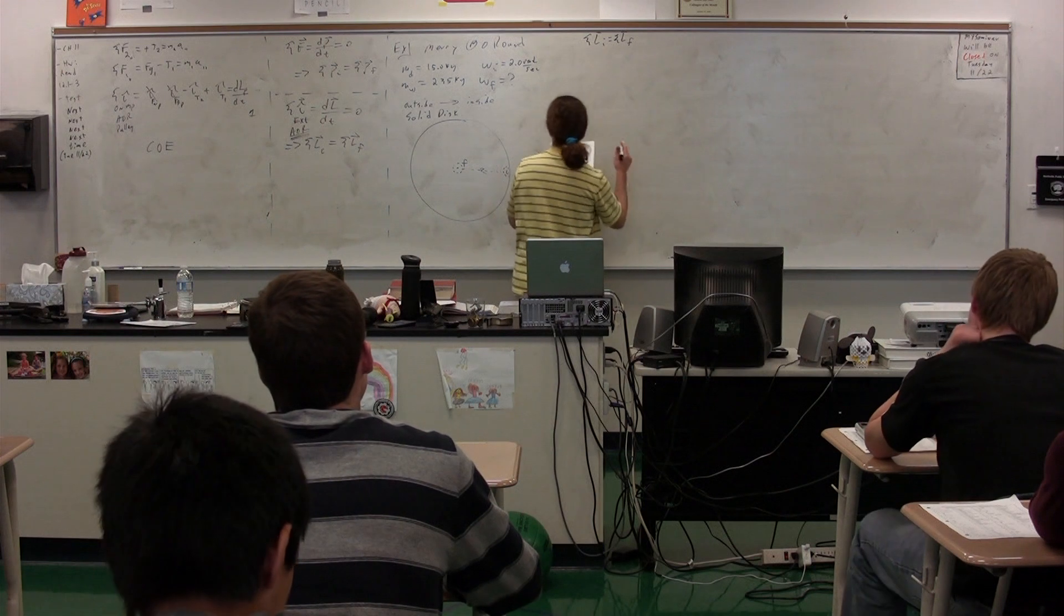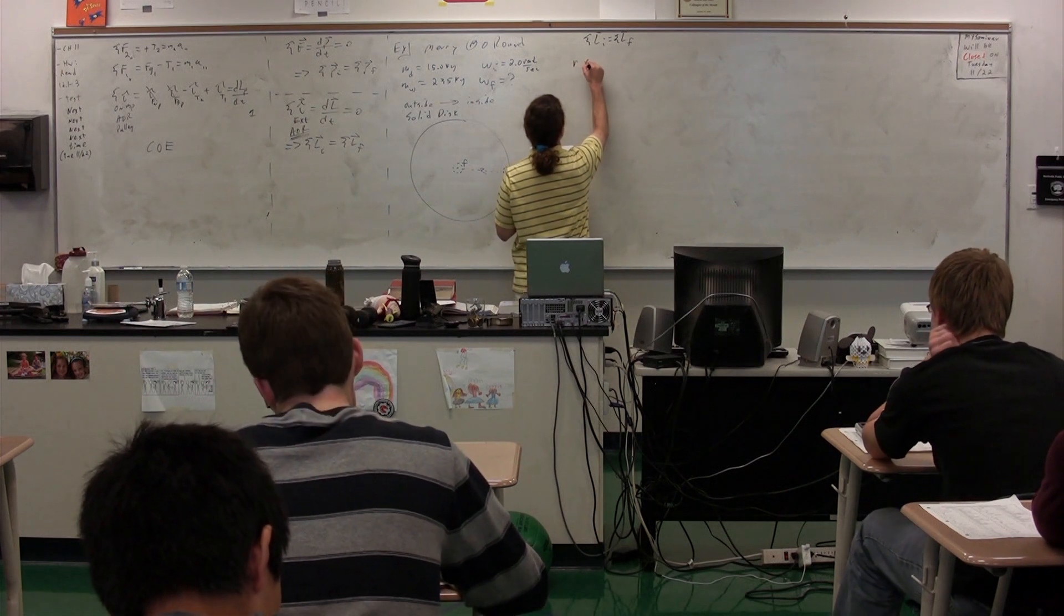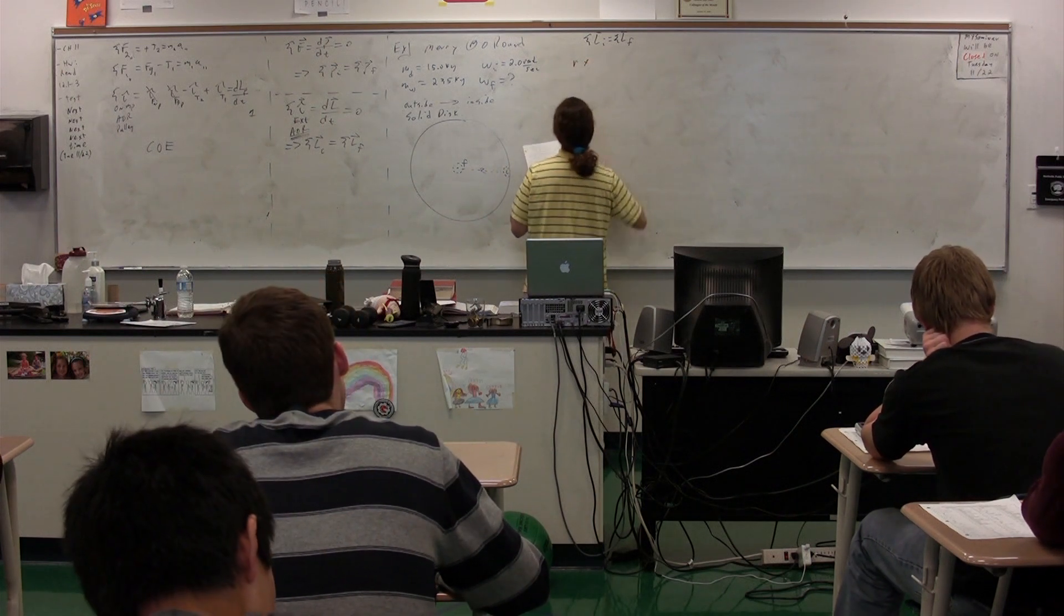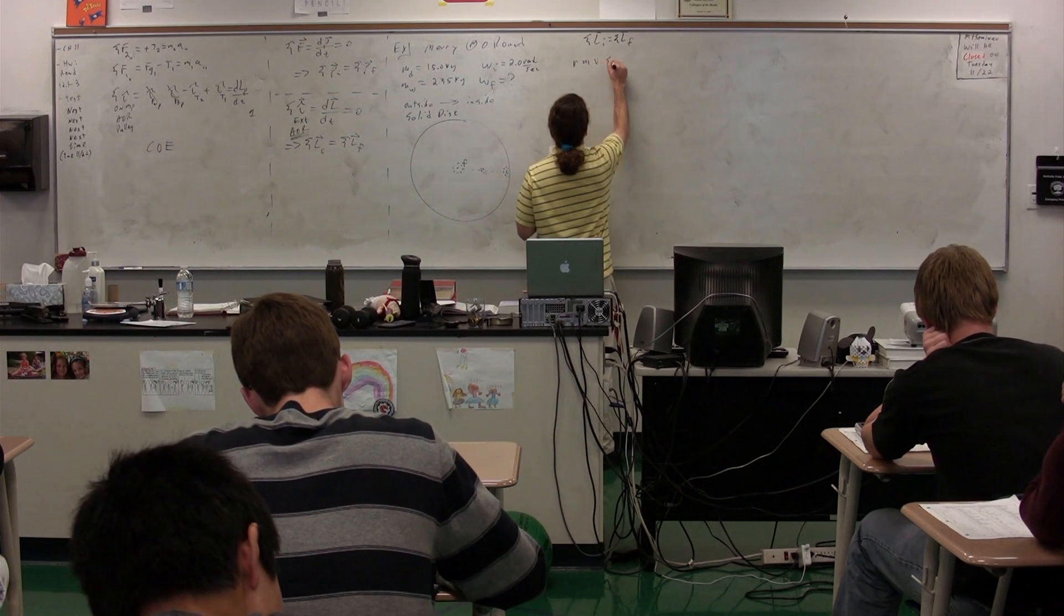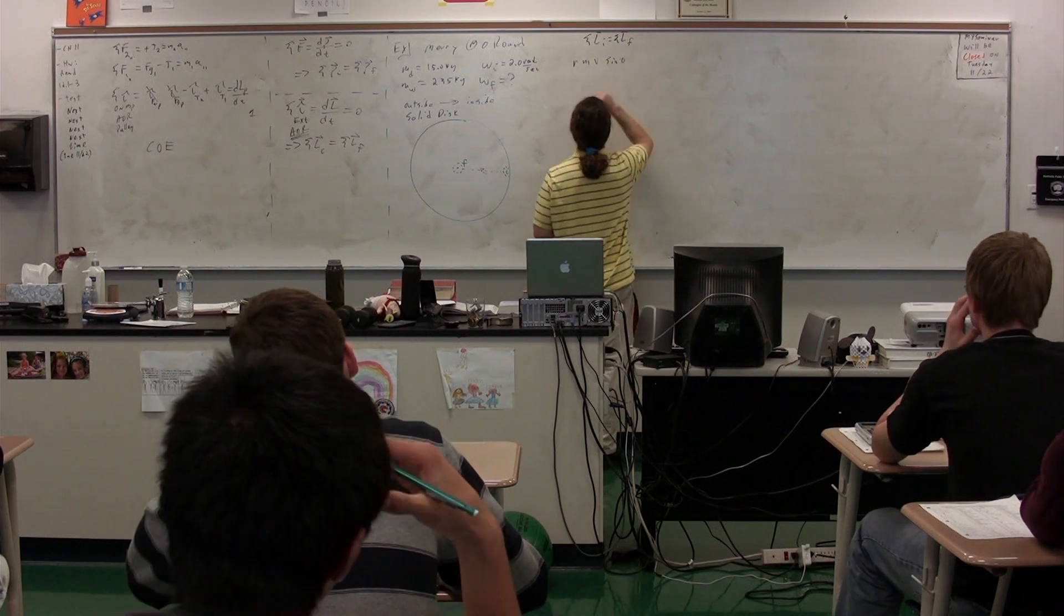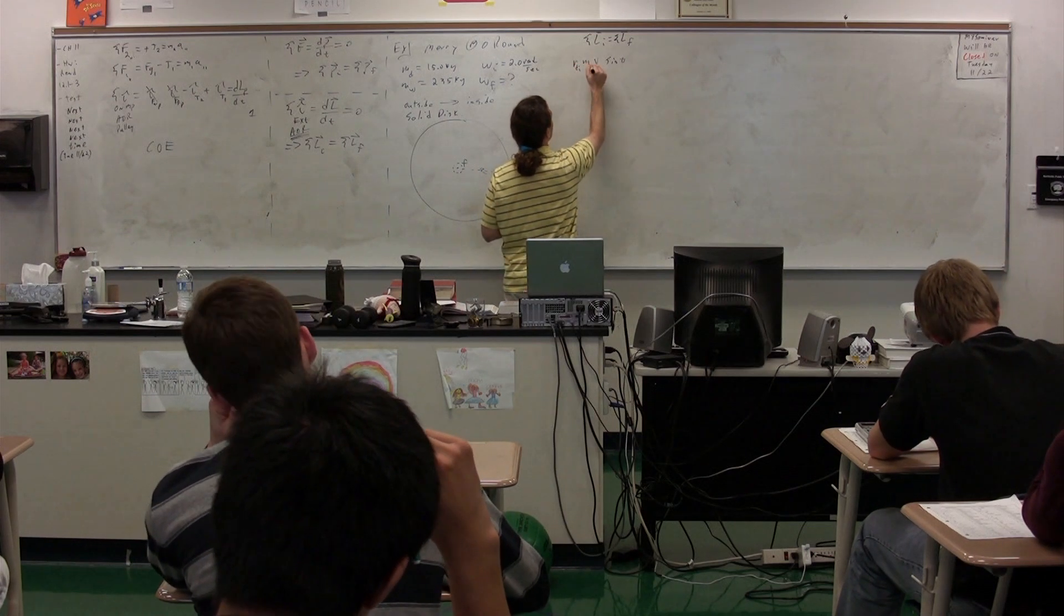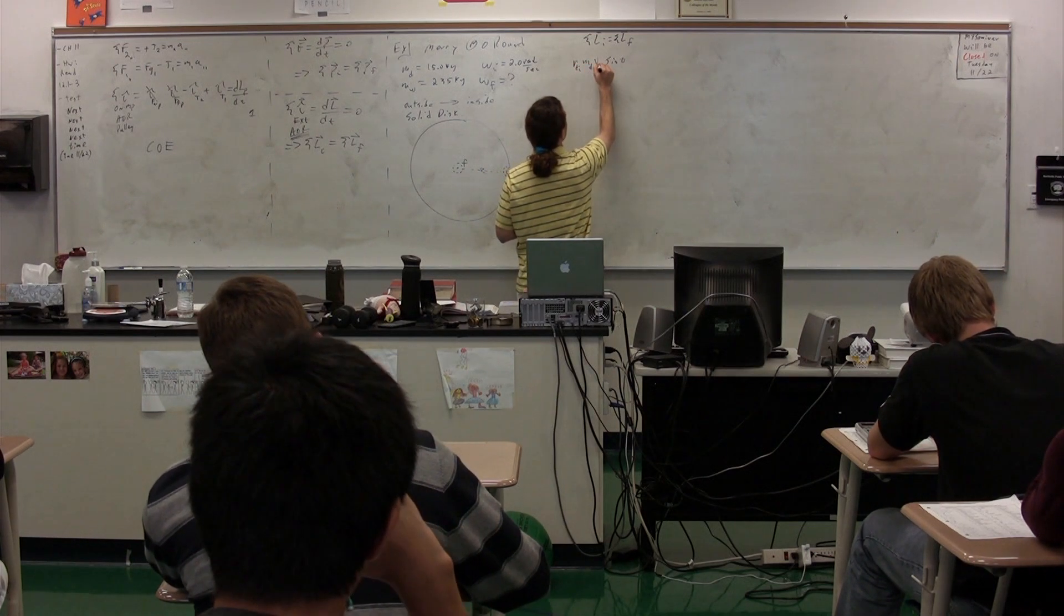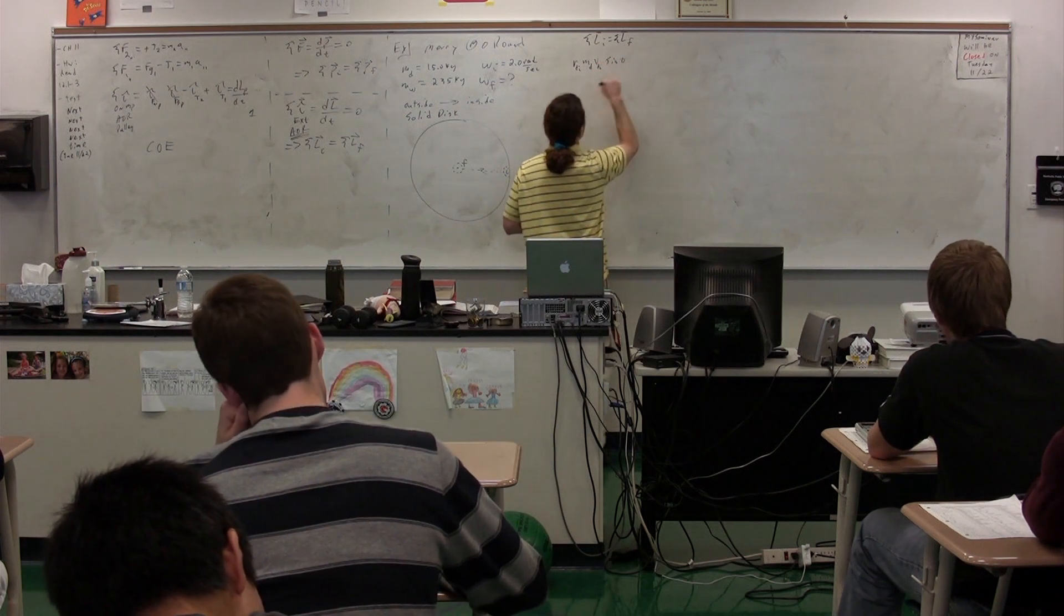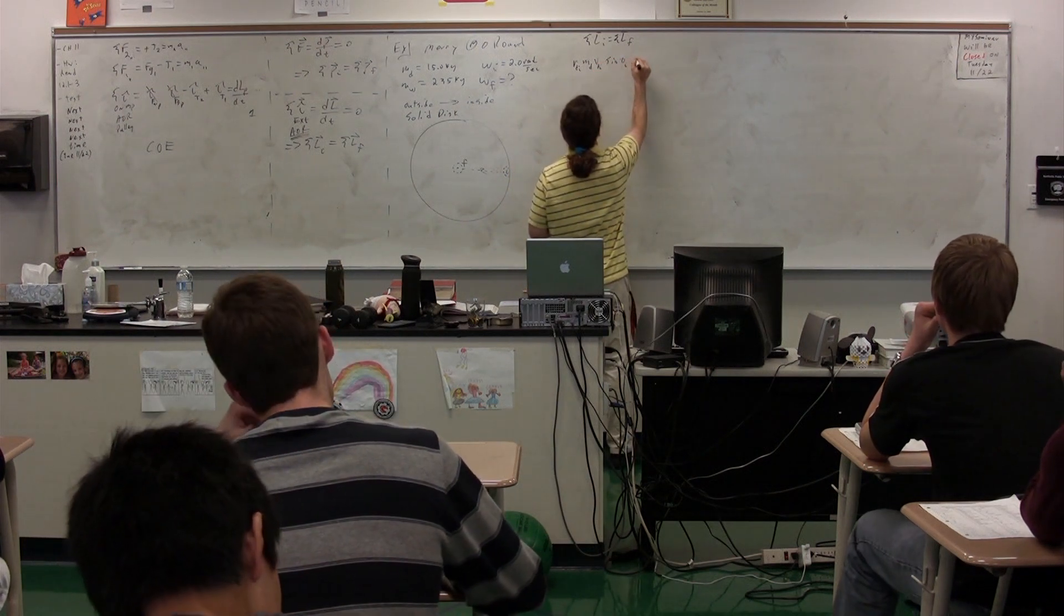So what we have is R cross, or we'll do this, Rmv sine θ, all of this initial for my daughter. So this is the R of my daughter initial, the mass of my daughter, the velocity of my daughter initial, and the angle initial.